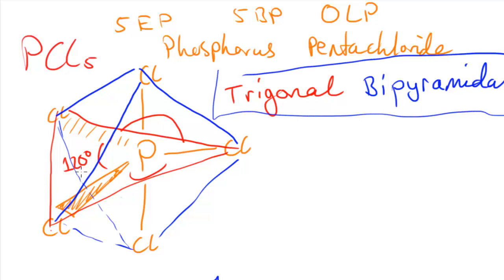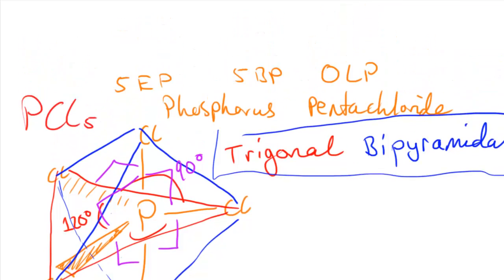The in-plane angles are 120 degrees. The other angles — between the axial chlorines at the top and bottom and the equatorial chlorines in the plane — are 90 degrees. All those different angles between neighboring atoms are 90 degrees.